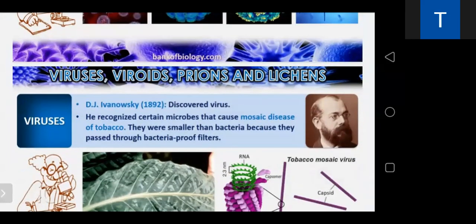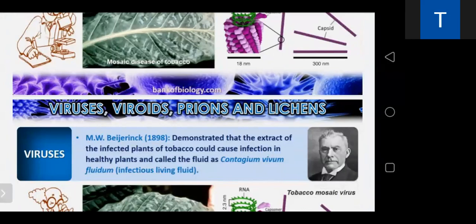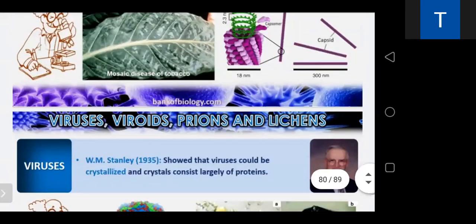M.W. Beijerinck demonstrated that an extract of infected tobacco plants could also infect healthy plants, and he called it contagium vivum fluidium — meaning infectious living fluid — the extract of the plant infected by mosaic virus. M.W. Stanley in 1935 showed that the virus could be crystallized and the crystals consist largely of proteins. You have to remember the names of these scientists and their contributions.